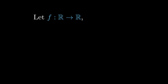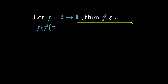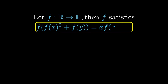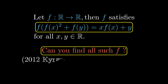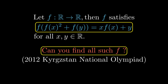Let f be a function that maps real number inputs to real number outputs. Then f satisfies the following functional equation for all real numbers x and y. Can you solve this functional equation — in other words, can you find all such functions with this property? This is a functional equation from the 2012 Kyrgyzstan National Olympiad.